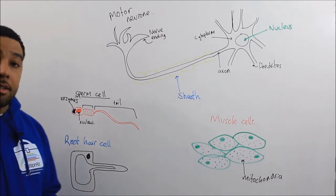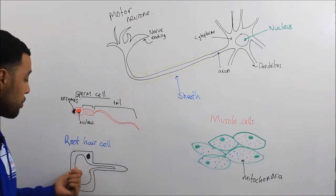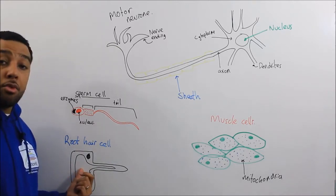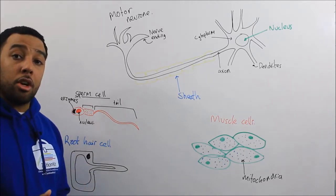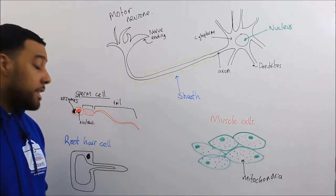We also have a root hair cell. We find the root hair cell in the roots of a plant. And the main job of the root hair cell is to absorb water and nutrients that the plant needs.